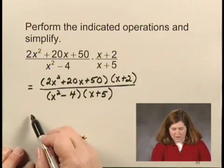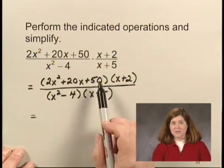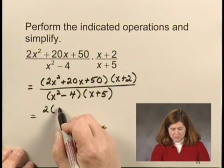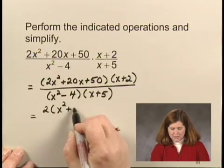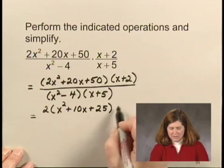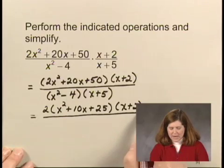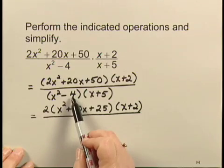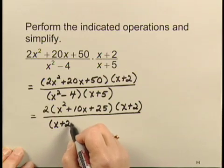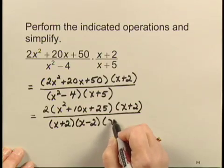In the numerator, to factor this trinomial, I need to begin by factoring out a common factor, and that factor is 2. So factoring out a 2, I have 2 times x squared plus 10x plus 25 times x plus 2. In the denominator, I have x squared minus 4 as a difference of squares. That factors into x plus 2 times x minus 2 times x plus 5.